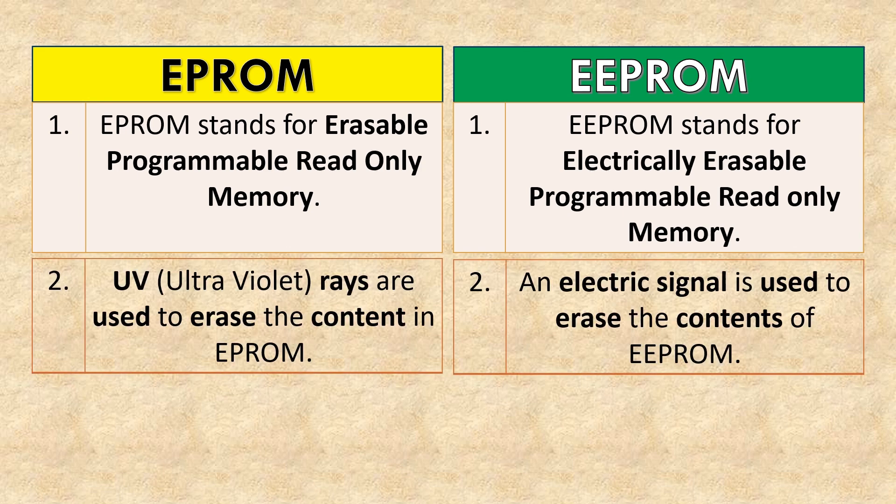UV (Ultraviolet) rays are used to erase the content in EPROM. An electric signal is used to erase the contents of EEPROM.